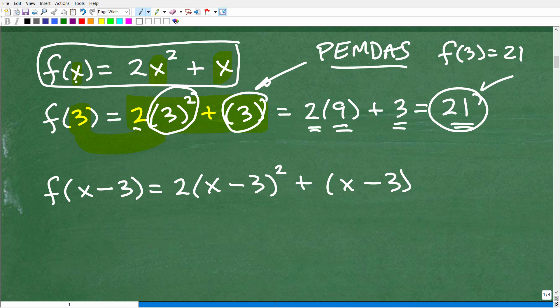So here I just evaluated this function for 3. But you can evaluate a function with anything that you want. I can plug in anything into these x's here. And what I want to do is plug in x minus 3. So if I want to find what f of x minus 3 is, well, I'm just going to replace those x's with x minus 3. You can see the setup here. I'm replacing the x's here with x minus 3.